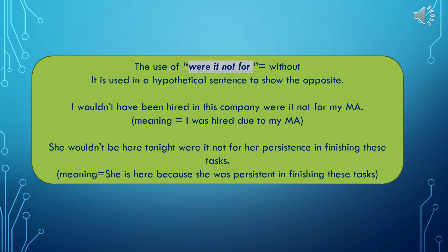The second thing is the expression 'were it not for,' which means 'without.' When we put it in a hypothetical sentence, we want it to show the opposite. For example: 'I wouldn't have been hired in this company were it not for my master' — meaning I was hired because of my master. 'She wouldn't be here tonight were it not for her persistence in finishing these tasks' — meaning she's here tonight because she was persistent. This is an important expression in reading and writing. It means 'without,' and it's a hypothetical case to show the opposite.